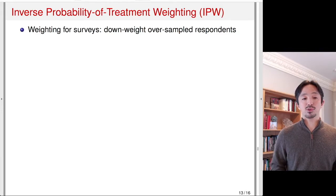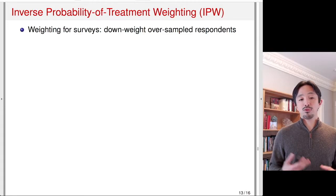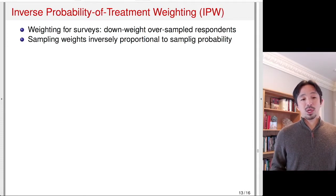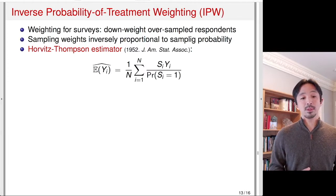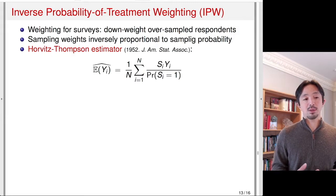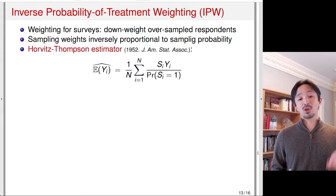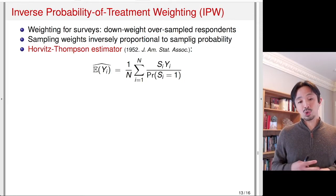The basic idea of weighting is the use of inverse probability of treatment weighting, IPW. It comes from the idea of weighting in surveys. In surveys, we often downweight oversampled respondents so that the sample — the people you interviewed — looks like the target population of interest. If you end up having too many older respondents than in the population, you will downweight those older respondents. The way to do it is to use sampling weights, which are inversely proportional to the sampling probability. So the more likely you are to be in the sample, the smaller your weight is going to be.